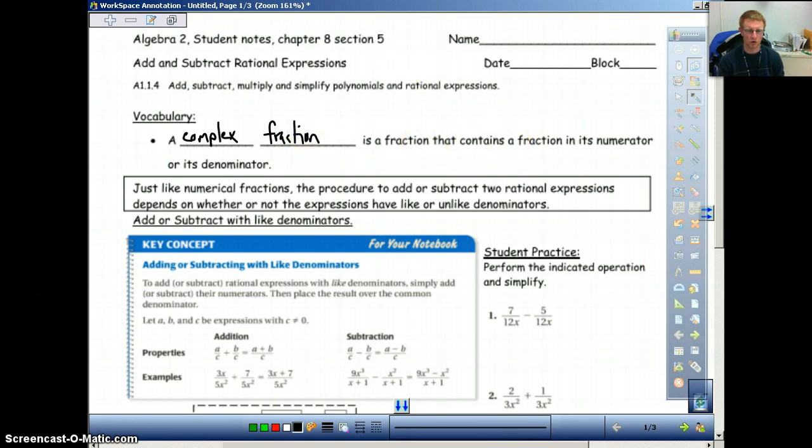The reason why addition and subtraction is so much more difficult than multiplying is because, the same thing with numerical fractions, the procedure to add or subtract two rational expressions depends on whether or not they have like or unlike denominators. So when you did numbers like one-third plus five-thirds equals six-thirds, the denominator has to be the same and the denominator will stay the same. So this ends up being six-thirds, which is two.